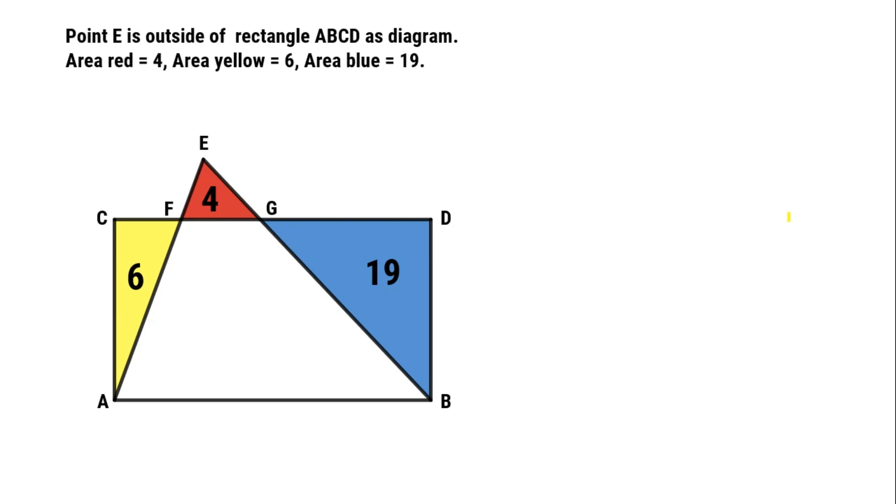Point E is outside rectangle ABCD as shown in the diagram. Area red is 4, area yellow is 6, area blue is 19. The problem is: what is the area of rectangle ABCD?